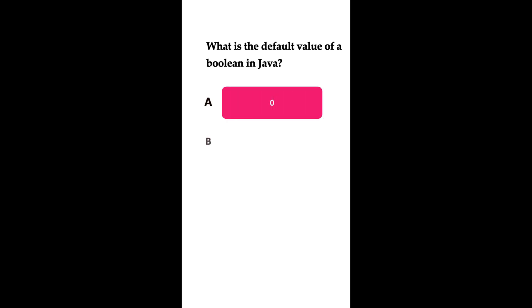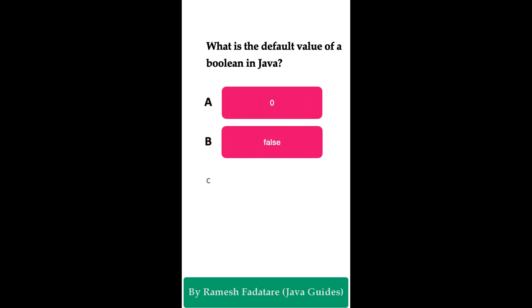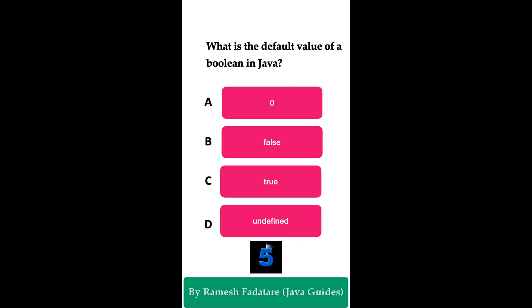Welcome to Java Quiz Series. What is the default value of boolean in Java? Option A: 0, Option B: false, Option C: true, Option D: undefined. You have five seconds to answer. The correct answer is Option B: false. In Java, boolean is a primitive data type with two values — false and true — and its default value is false.